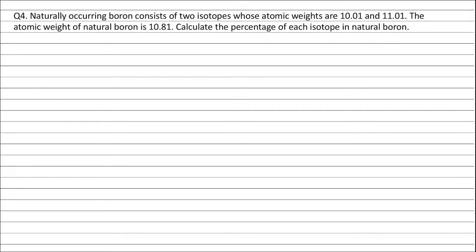Question 4. Naturally occurring boron consists of two isotopes whose atomic weights are 10.01 and 11.01. The atomic weight of natural boron is 10.81. Calculate the percentage of each isotope in natural boron.